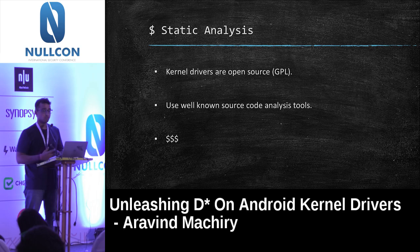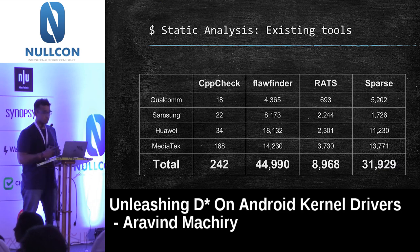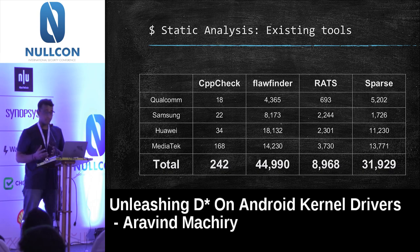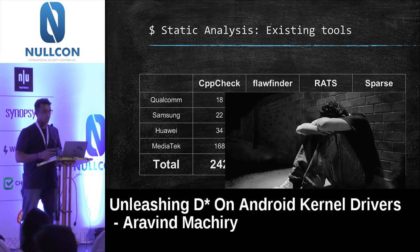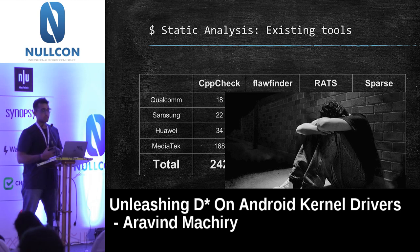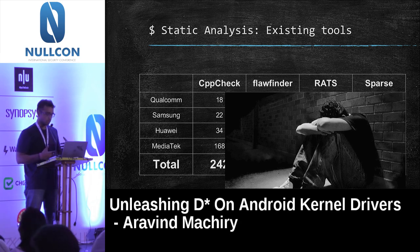I actually did that — I tested famous open source tools on different vendor kernels. The warnings produced were gigantic. Except for CPPCheck and FlowFind, all the other tools gave thousands of warnings. Going through each of these warnings was a nightmare. I had a lot of sleepless nights analyzing them because they don't give enough information about why the warning was there in the first place.